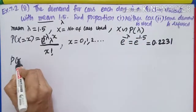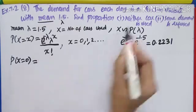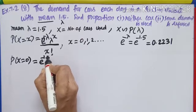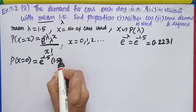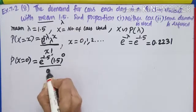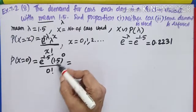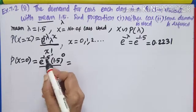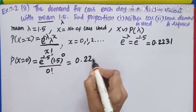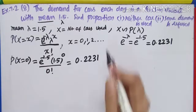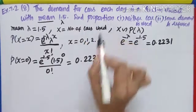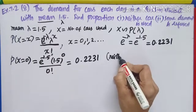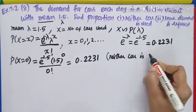When the question asks for 'neither car is used', P(X = 0). Substituting: e^(−1.5) · 1.5^0 / 0!. Now 1.5^0 = 1 and 0! = 1, so the answer is e^(−1.5) = 0.2231. This is the proportion for neither car being used.